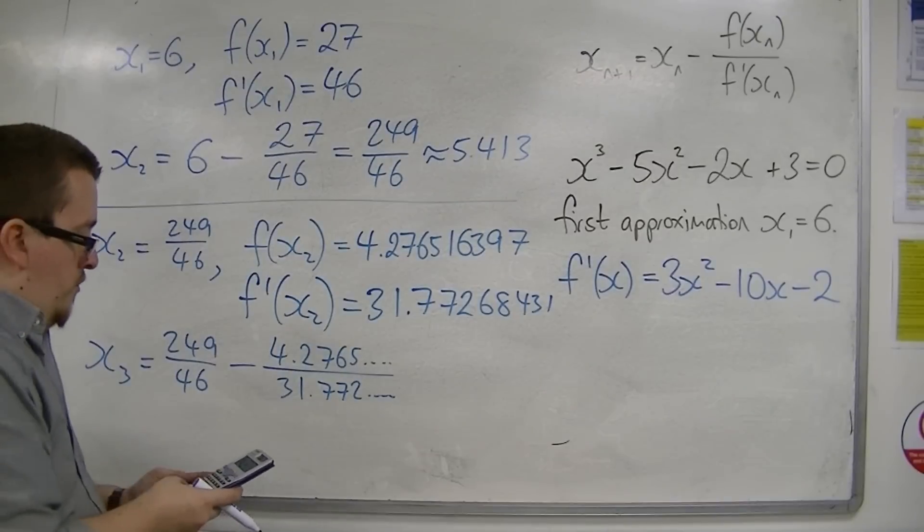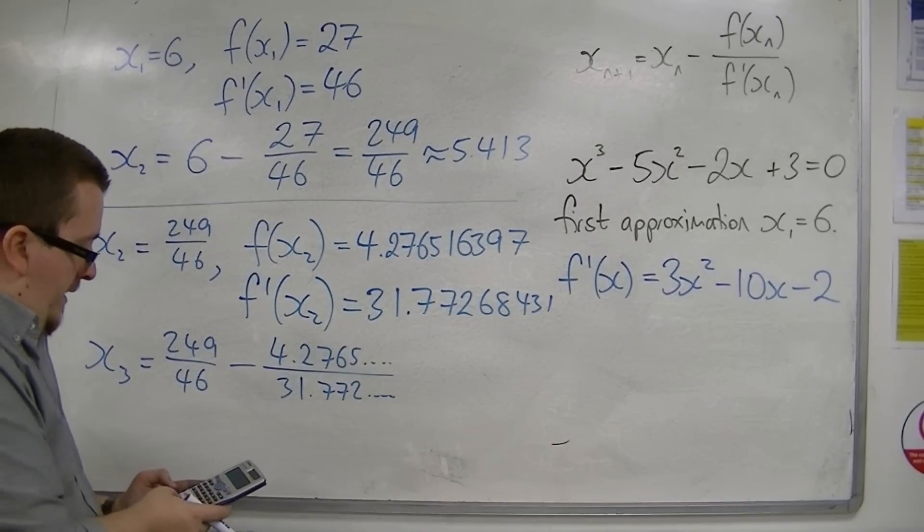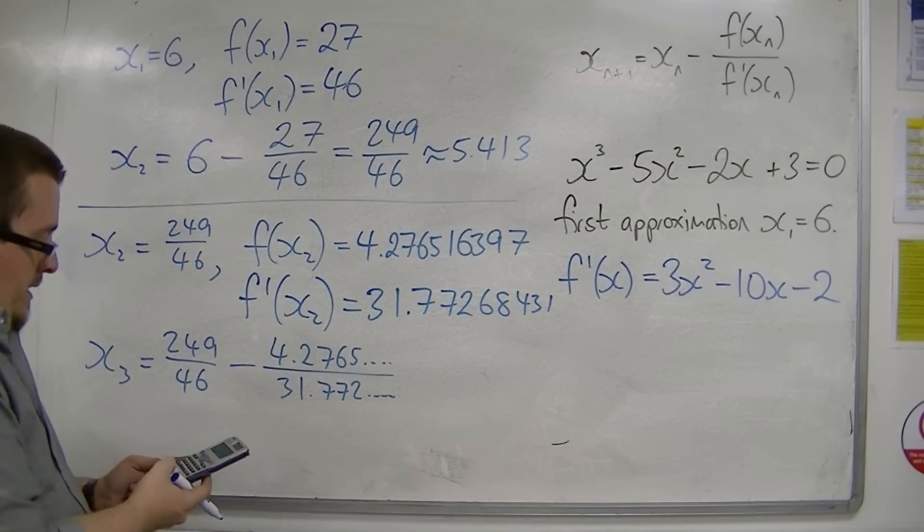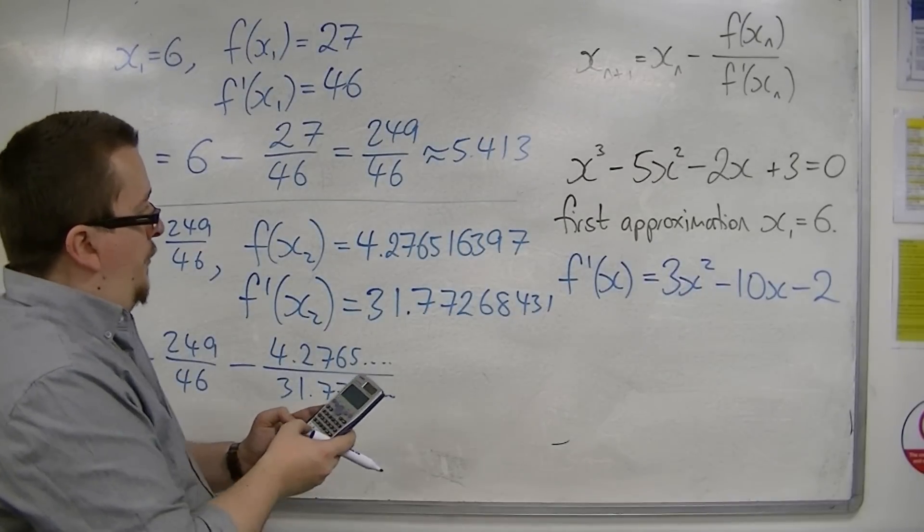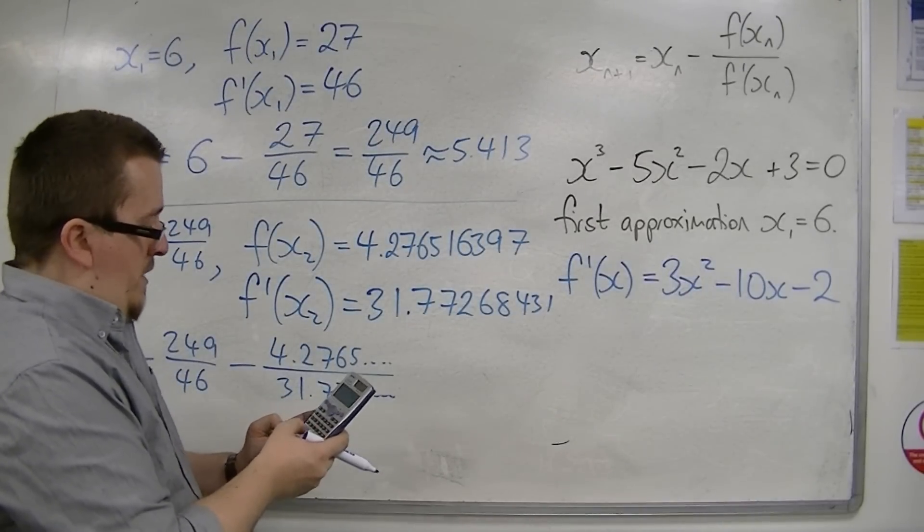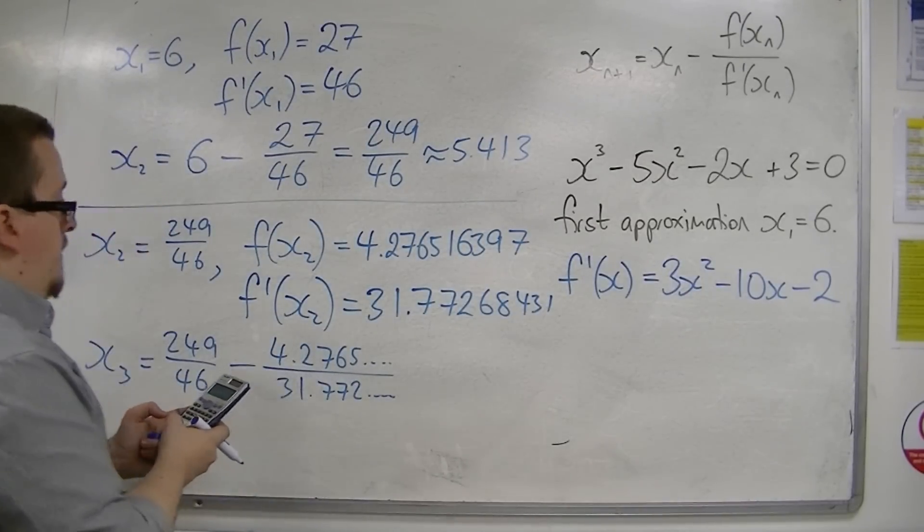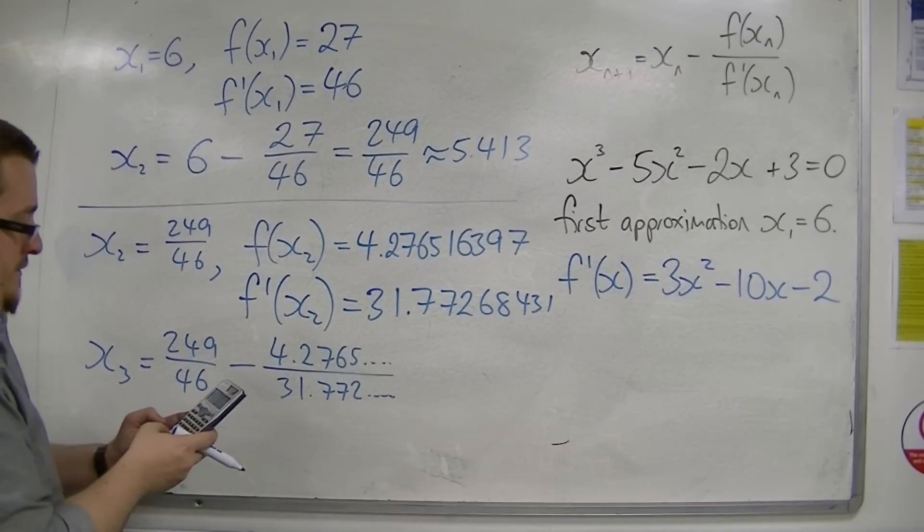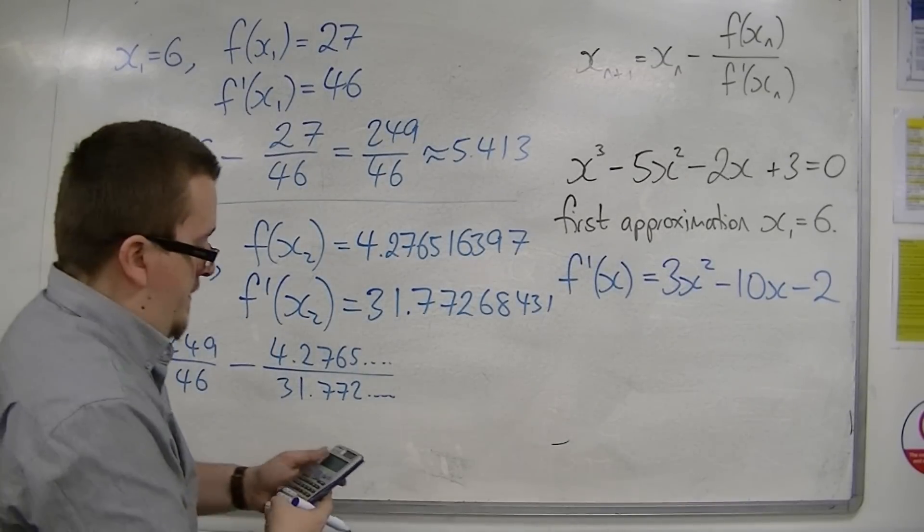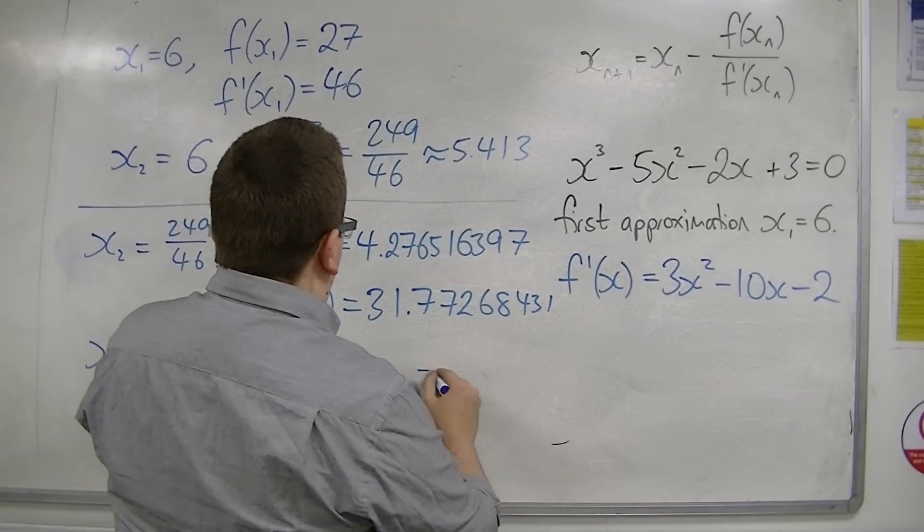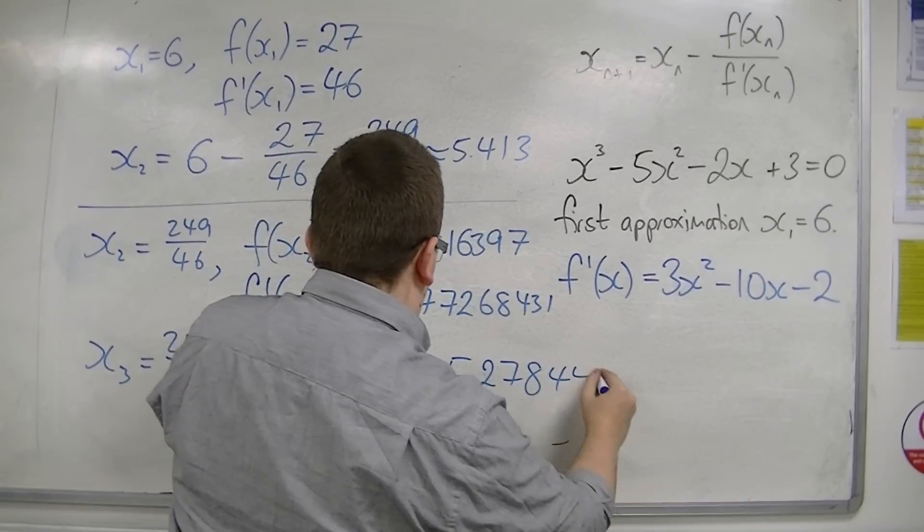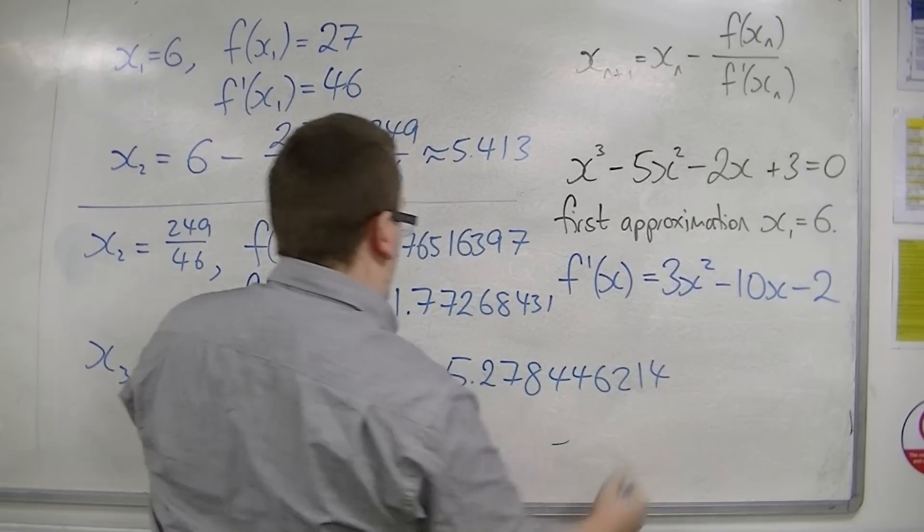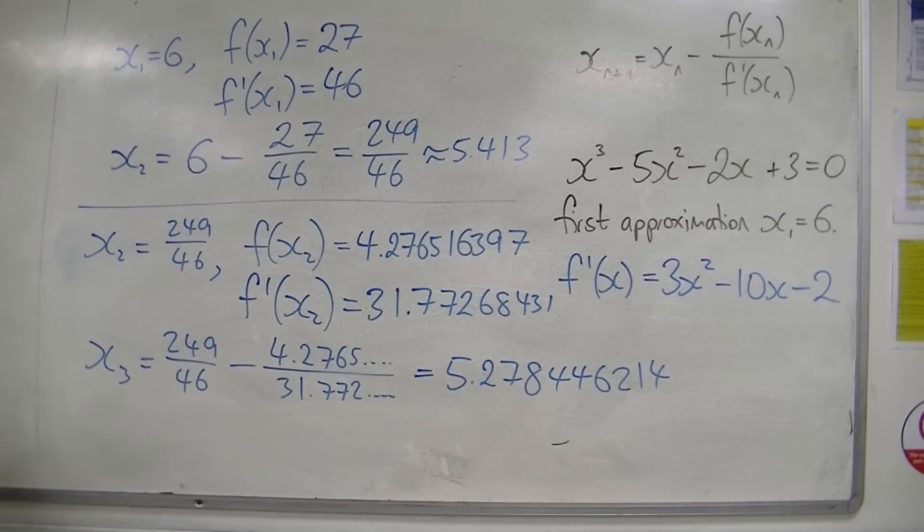So I'm going to try and do this in one calculation. We'll see how it goes. 4.276516397 divided by 31.77268431. And I get 5.278446214 as my full calculated display.